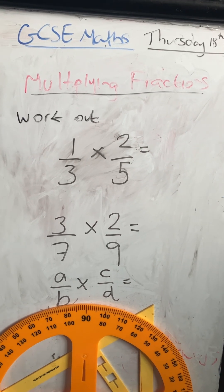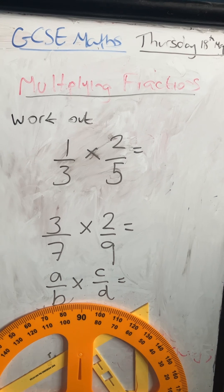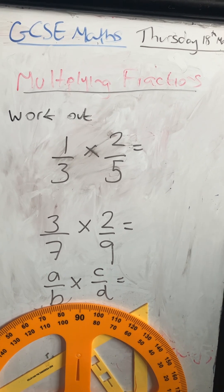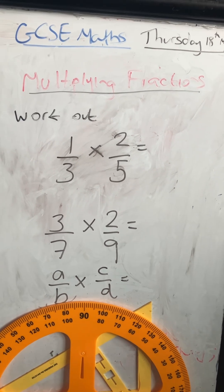GCSE 9 to 1 maths, multiplying fractions. In roughly 36 seconds, let's go.